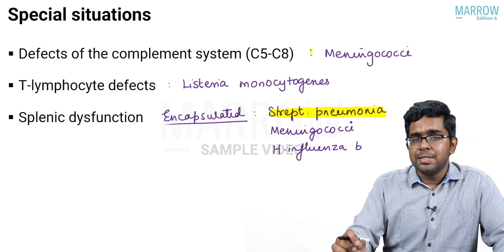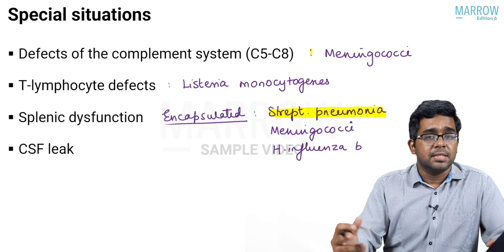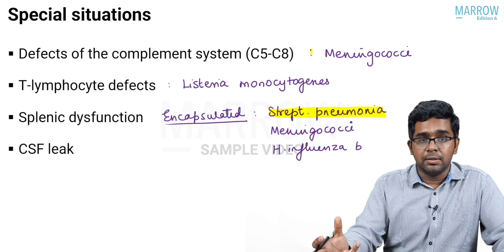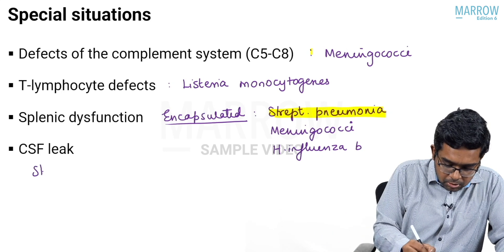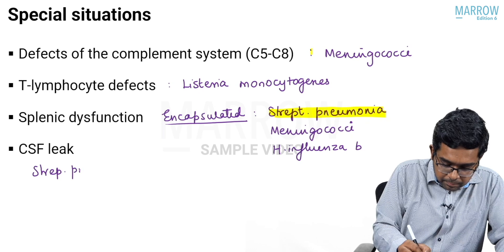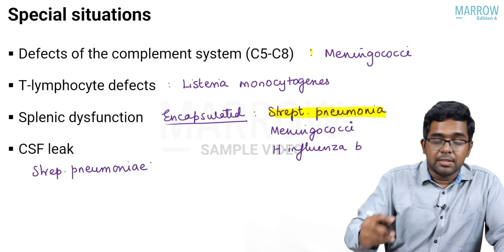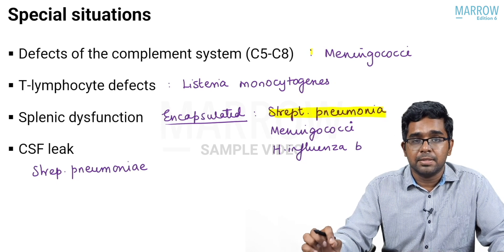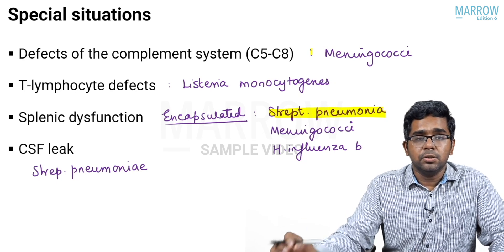One more condition is CSF leaks, such as CSF otorrhea or rhinorrhea. In that situation, again Streptococcus pneumoniae is the commonest organism. These are special situations where the organisms can be slightly different and you should make a note of this.